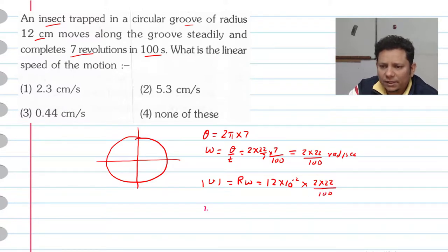So your speed is v, its value is 12 × 2 × 22 × 10⁻⁴ meters per second.